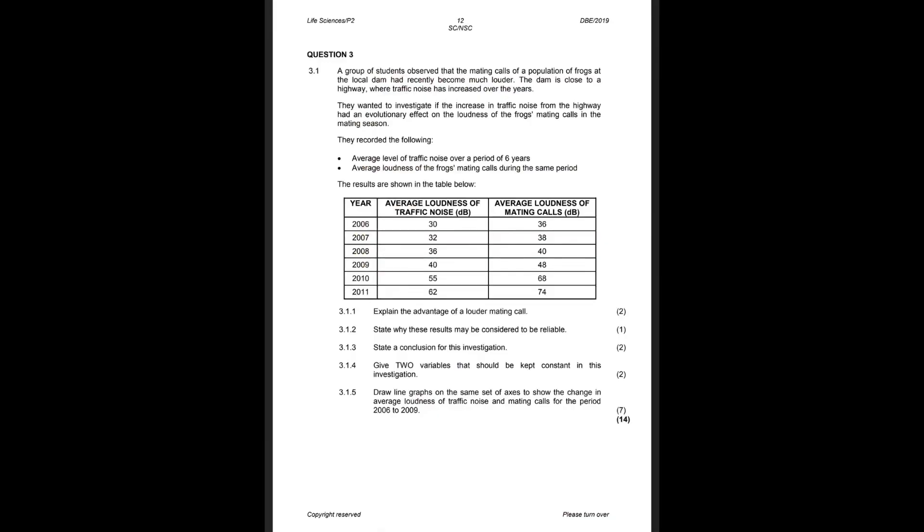As we progress through the paper, my first prediction for question three is the investigation question. Over the years, the investigative question has taken the form of a speciation or evolution question, meaning you need to be well versed in natural selection and speciation. Essentially, they take evolution in current times — like antibiotic resistance or insecticide resistance — make an investigation about it, and then ask you questions.